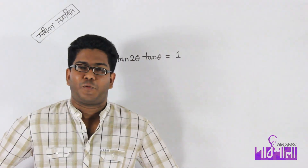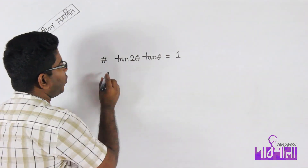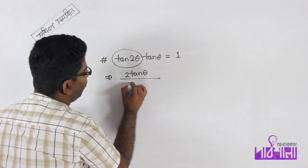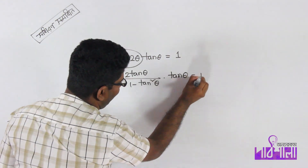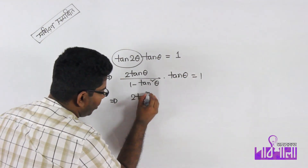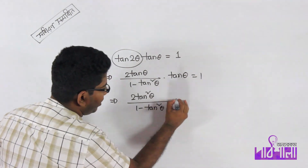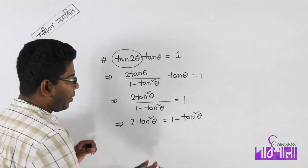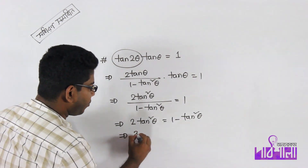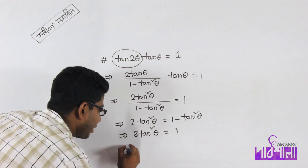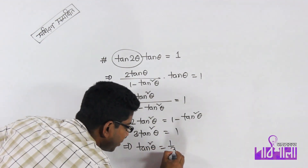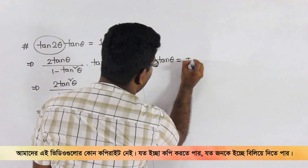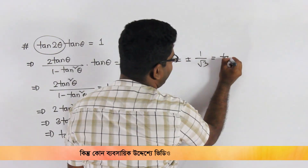Now, consider tan 2x equals tan x equals 1. Using the formula: 2 tan squared theta divided by 1 minus tan squared theta gives 2 tan squared theta, leading to 3 tan squared theta.